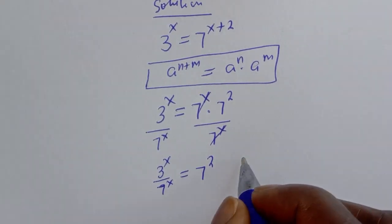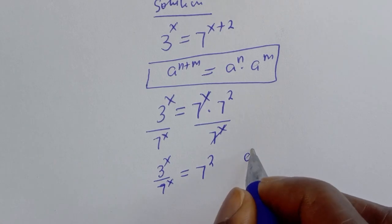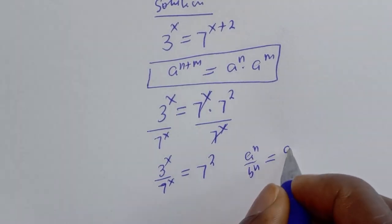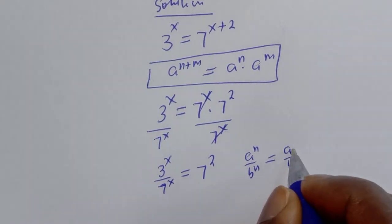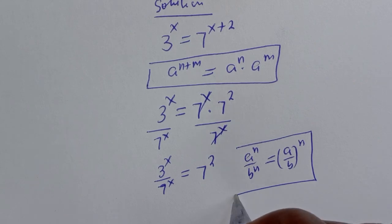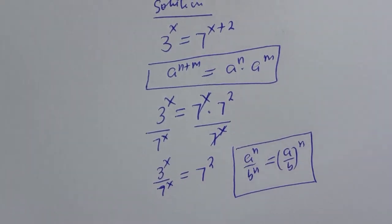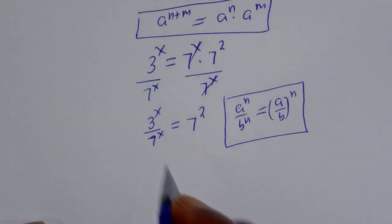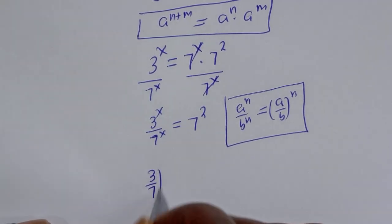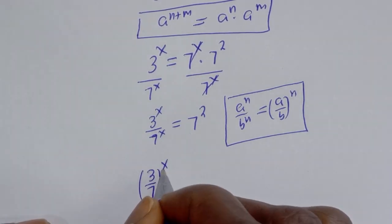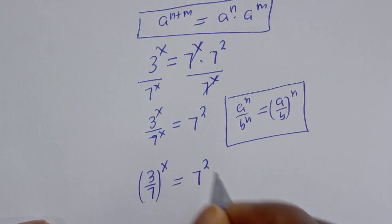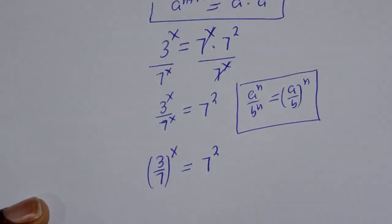Now if you have a raised to power n over b raised to power n, this is equal to a over b raised to power n. So this can be written as 3 over 7 to the power s is equal to 7 squared.